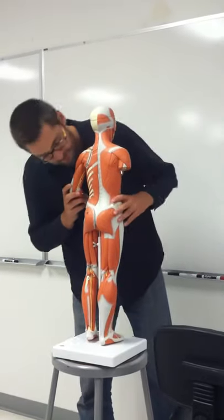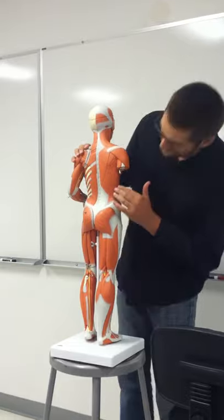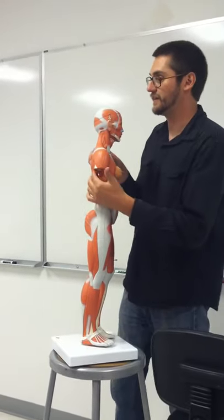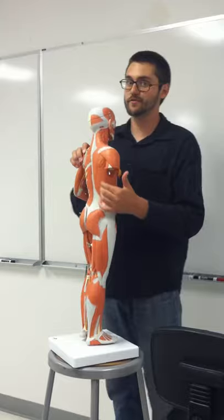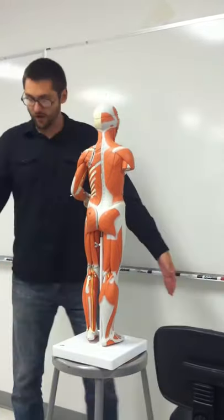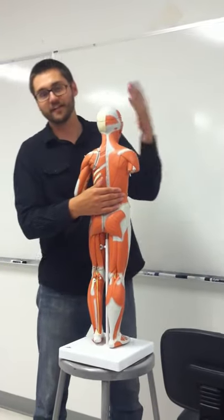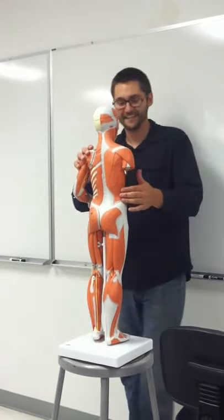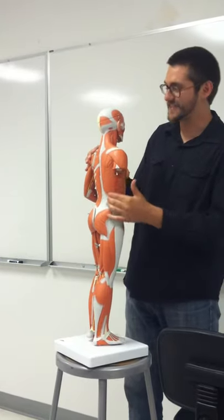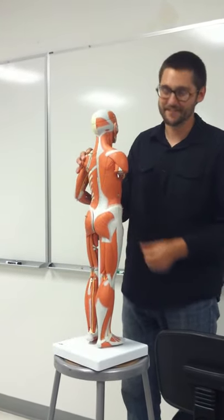There's another muscle inferior to trapezius called latissimus dorsi. Latissimus dorsi is going to be an extensor of your arms — it pulls your arms back. Fun fact: in beef, latissimus dorsi is like carne asada, that really thin meat.